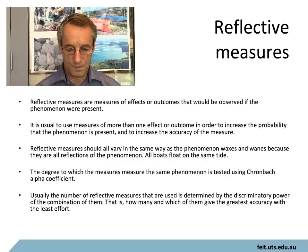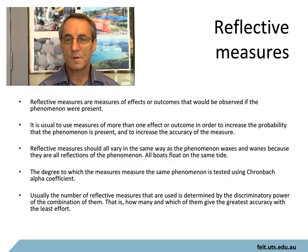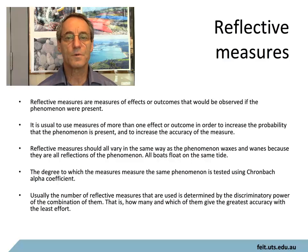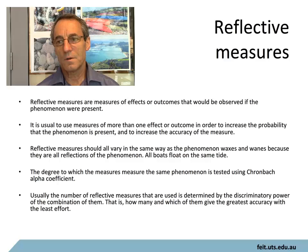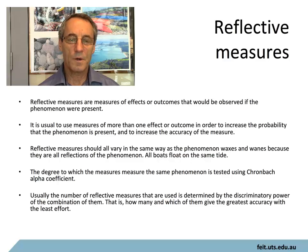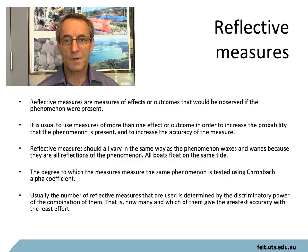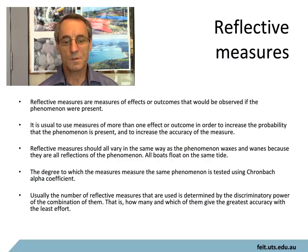Reflective measures are usually used in models. The degree to which the measures reflect the phenomena is itself measured by the degree to which they all vary in the same way. There is a test for it called Cronbach's alpha. The colloquial way of putting it is that all boats go up and down on the same tide — the elevation of the boat is a consequence of the tide. So if all the things you're measuring are varying in the same way, there's likely to be a common cause, and the degree to which that's true is measured by Cronbach's alpha.